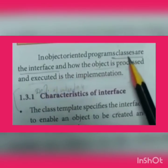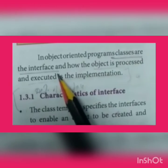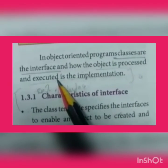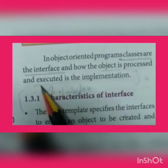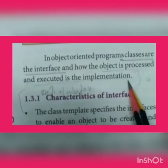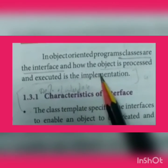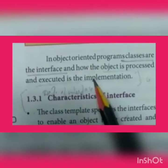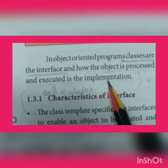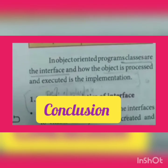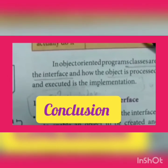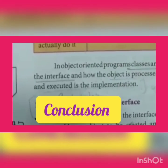The implementation defines how to do it. If there are any data members, they will be defined by the functions. Classes are treated as the interface, and how the object is processed and executed is called the implementation. On the whole, the interface defines what an object can do, and the implementation carries out those instructions defined by the interface.